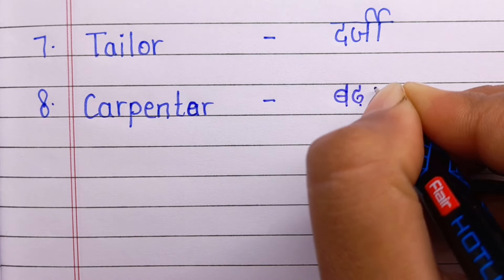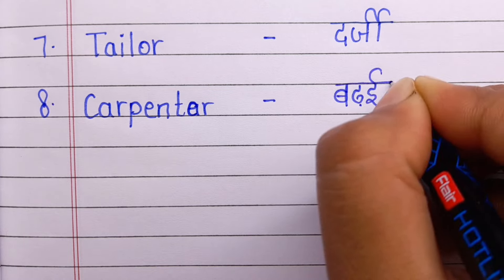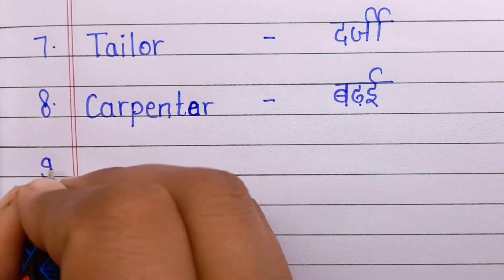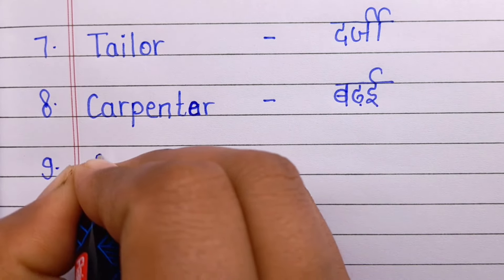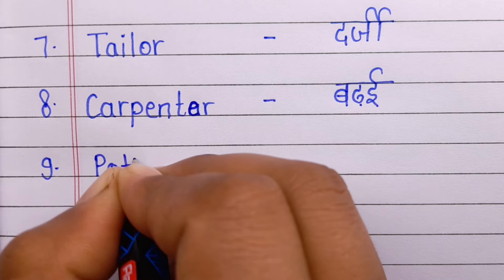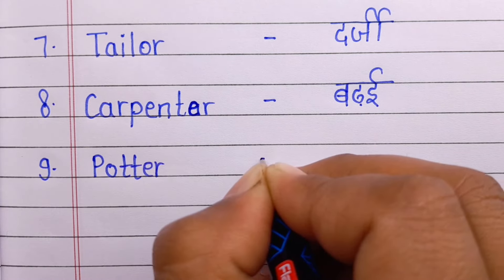Number 8: Carpenter. Carpenter means bari.